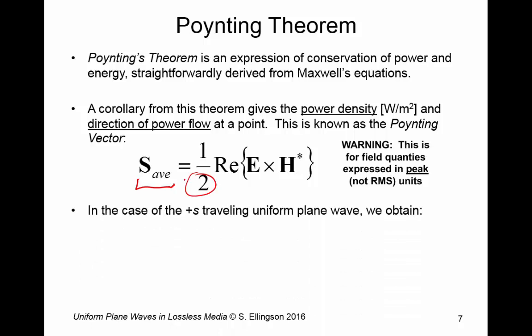In the case of the plus S traveling uniform plane wave that we considered in the previous slide, if we take that result and we plug it back into this equation for the Poynting vector, we find that the time average power and the direction in which it flows is given by this expression. So this is the leading coefficient for that description of the plane wave, and this is the direction in which the power is flowing.